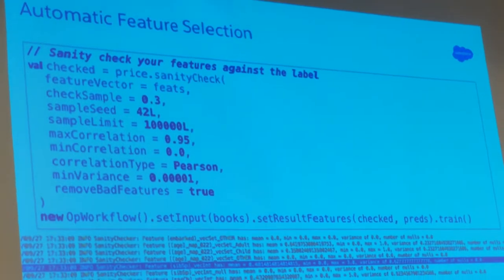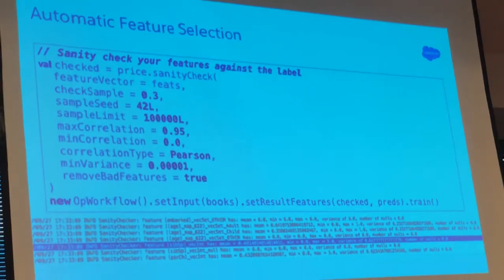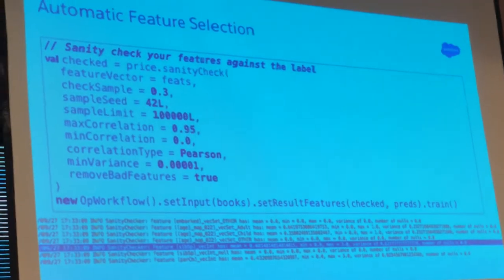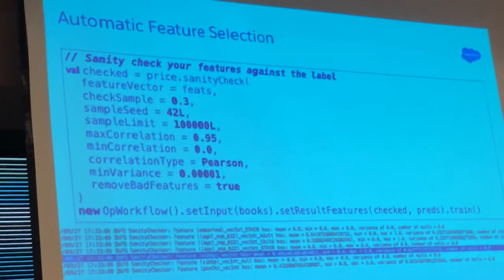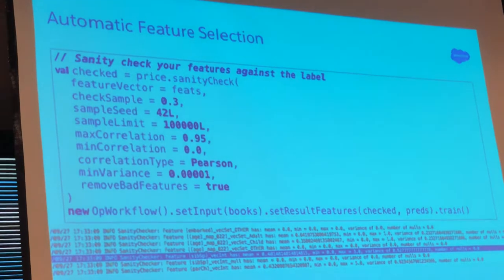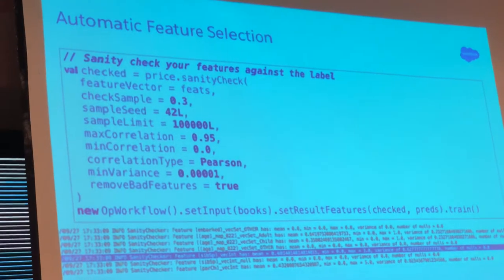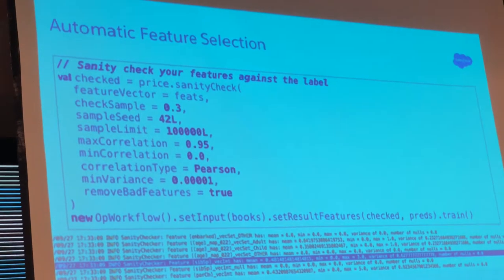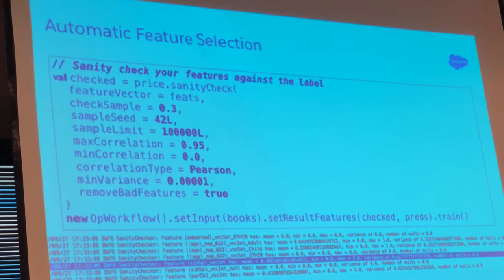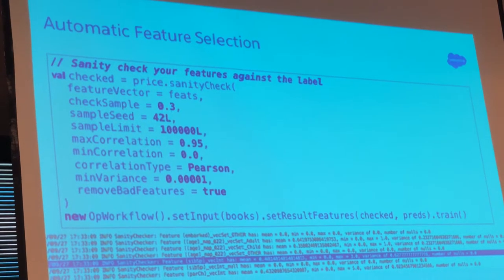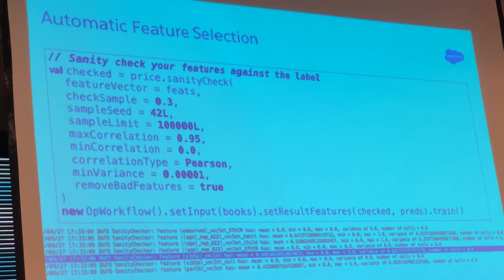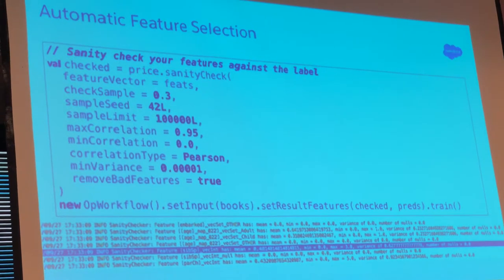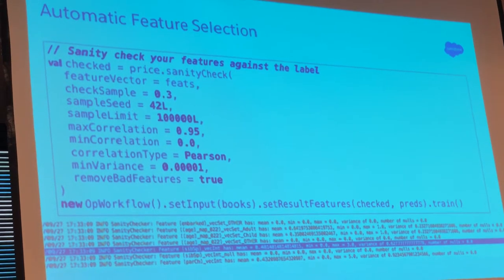From a developer perspective, users write one line of code: go sanity-check my features, here's the feature vector, compute the Pearson correlation or whatever other correlation you want. We compute it and print it out, and we highlight the problematic features.